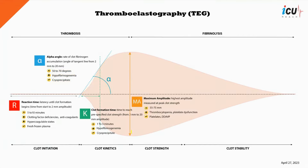The maximum amplitude, or MA parameter, measures the strength and firmness of the blood clot, providing insight into the overall clotting ability of the blood. The normal range for MA is 55 to 75 millimeters. If the MA is decreased, it may suggest thrombocytopenia or platelet dysfunction. In such cases, platelet transfusion or desmopressin acetate may be recommended as a potential treatment.